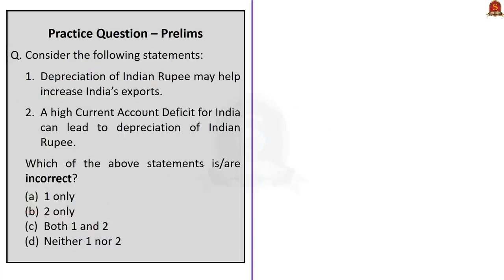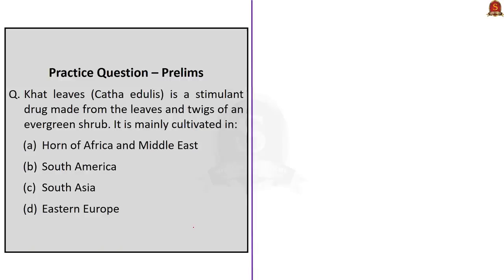The next question has two statements. First statement: depreciation of Indian rupee may help increase India's exports — this is correct because rupee depreciation leads to a rise in exports, as importers from other countries get more products from India for the same dollar expenditure. Second statement: a high current account deficit for India can lead to depreciation of Indian rupee — this is also correct because current account deficit means import bill exceeds export bill, leading to adverse balance of payments, and India's increased demand for foreign currency leads to rupee depreciation. The question asks for incorrect statements, but both are correct, so the correct answer is option D: neither one nor two.